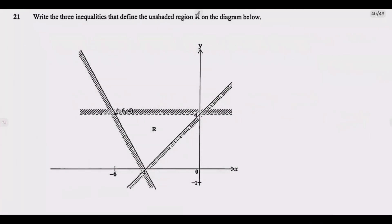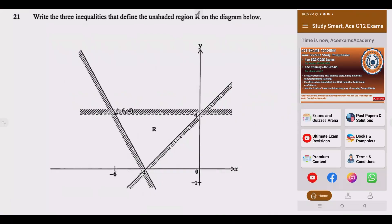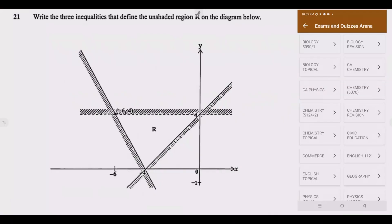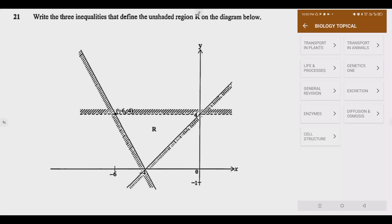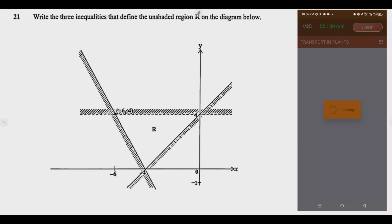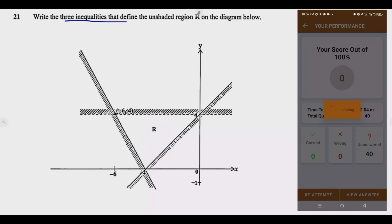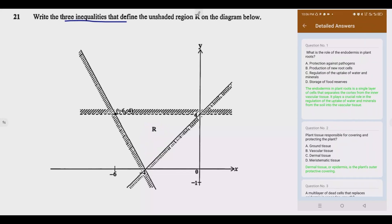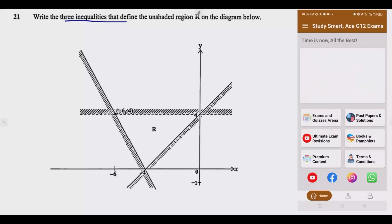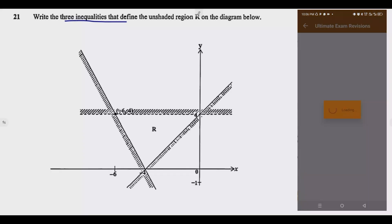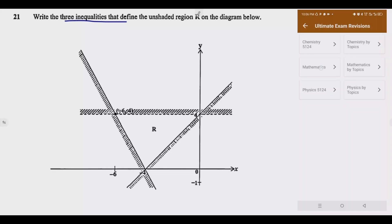We look at question 821: write the three inequalities that define the unshaded region on the diagram below. So which region are we looking for? We are looking for this region — this is the unshaded region. The question requires us to write three inequalities. What is key is identifying the region, and also identifying the lines — whether they are solid or dashed.